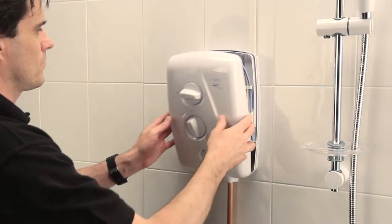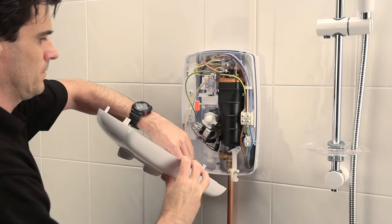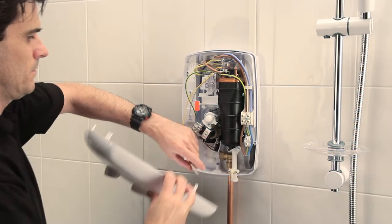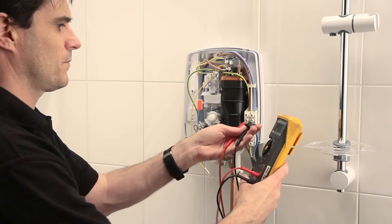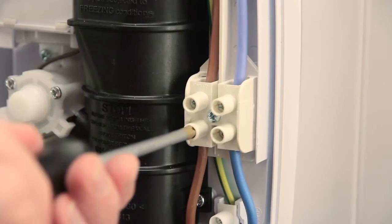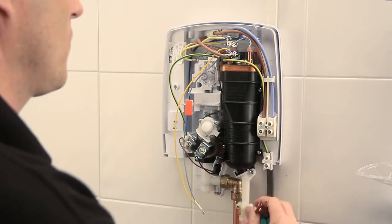Undo the cover screws and remove the cover of the old shower. Unclip the cable to the power indicator light and remove the service tunnel. Test to check the electric is off. Then disconnect the supply cable and water supply.